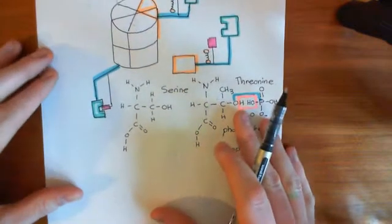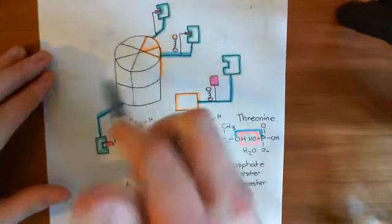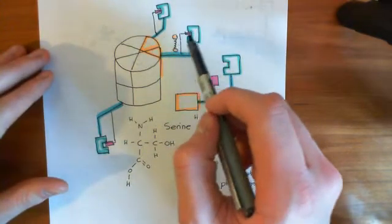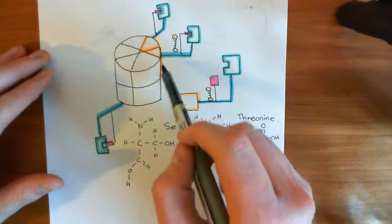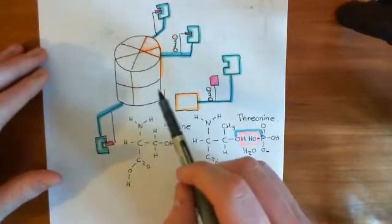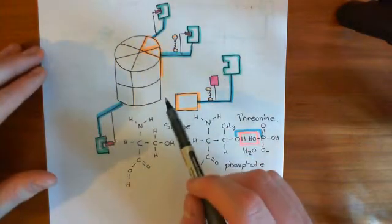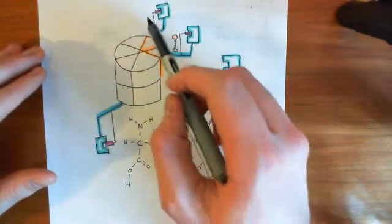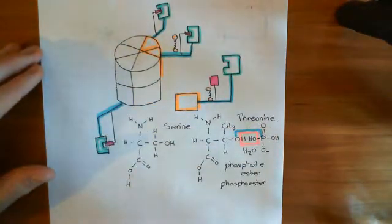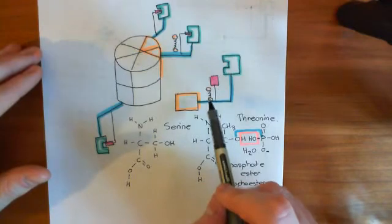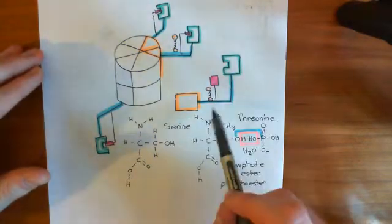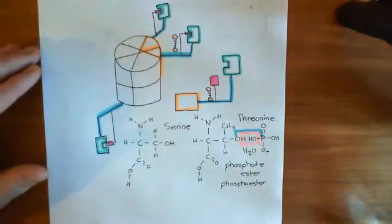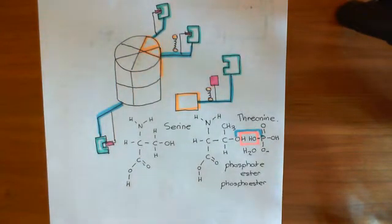Even though the enzyme goes around in this large oligomer, each of the 12 enzymes can function on its own. In order to activate each one, you must have a calcium-calmodulin complex binding to each one of their autoinhibitory domains. Having just one calcium-calmodulin complex activate one of them does not mean all the others become active — you have to have all of them being activated individually.